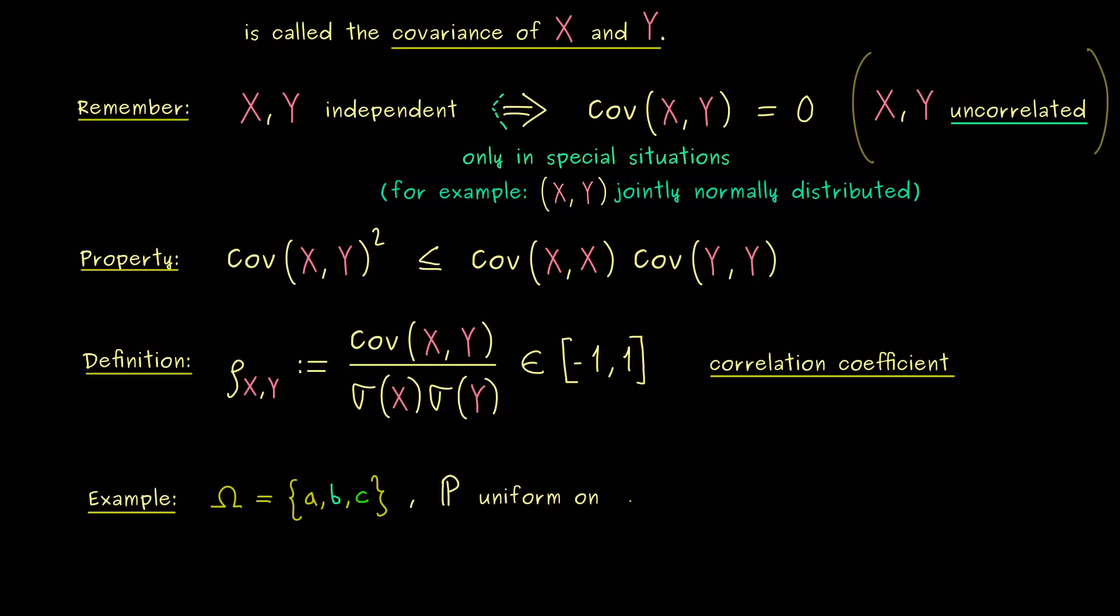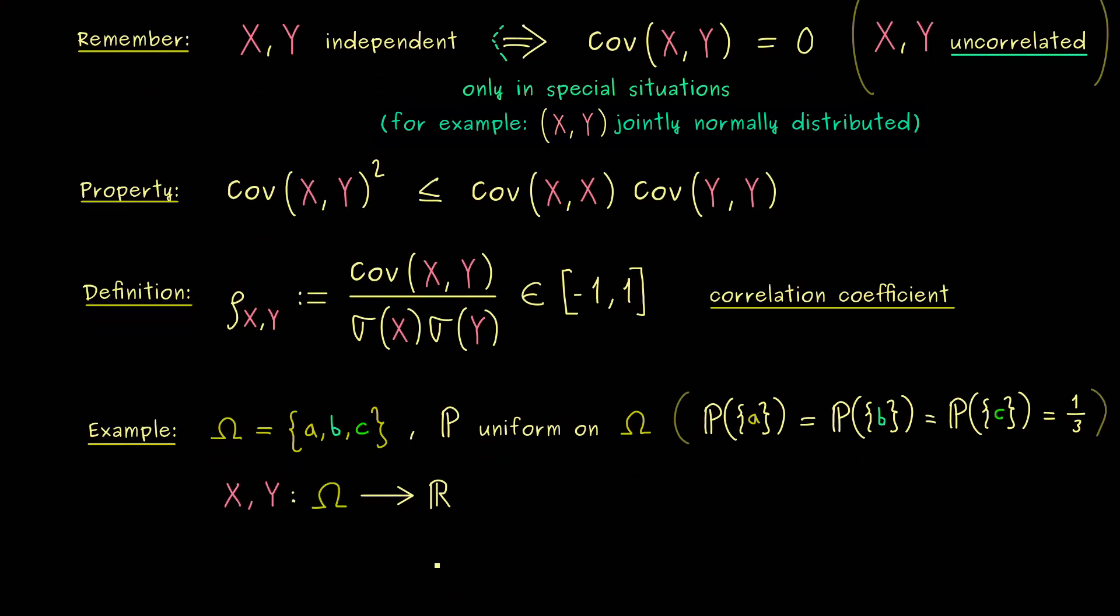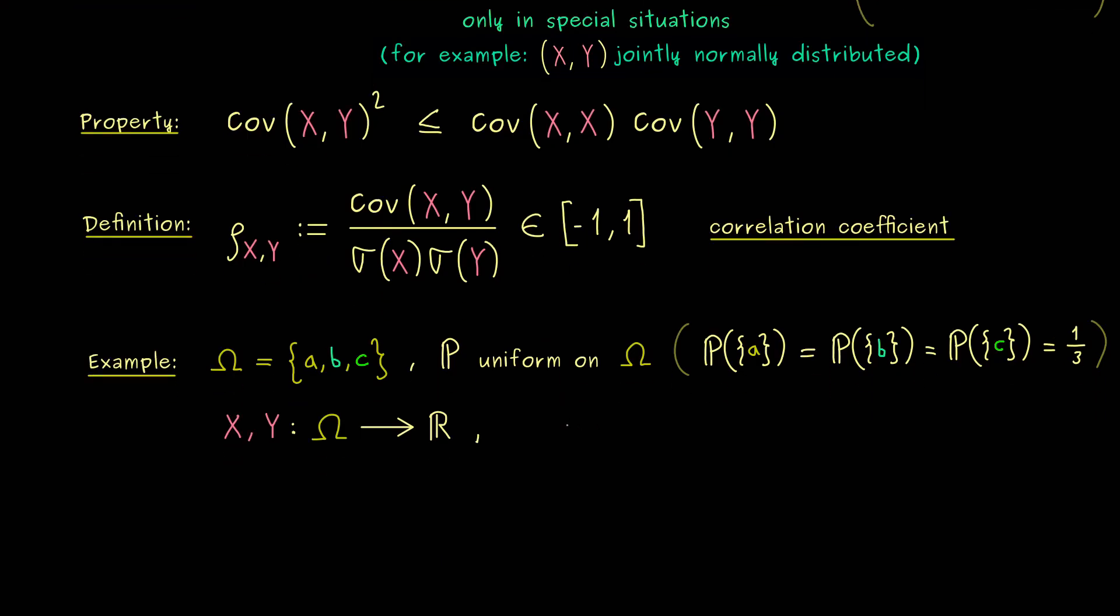And now our probability measure P should be uniform on omega. This means, all the singletons here have the same probability and it has to be one third. Indeed, that's what you know, that's what we mean by a uniform distribution on a discrete set. And now missing is only the explicit definition of the two random variables. And we can do that by saying what I do with the three elements.